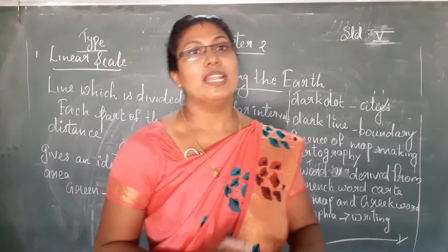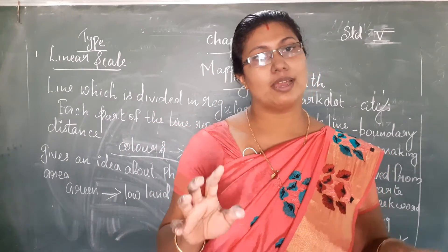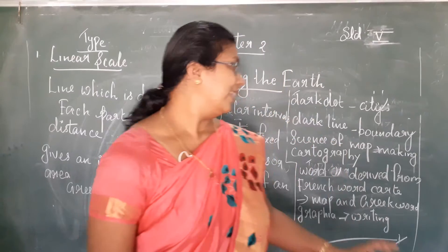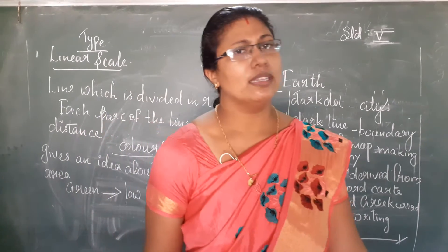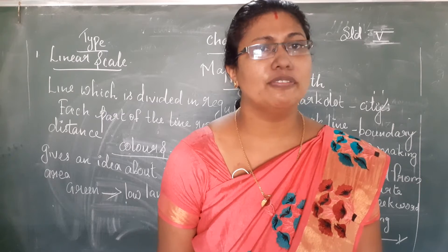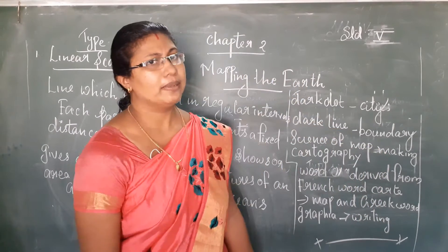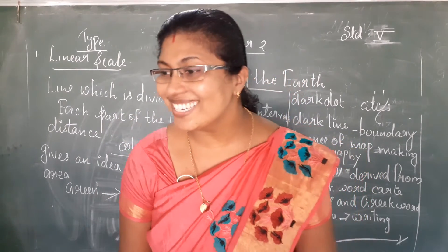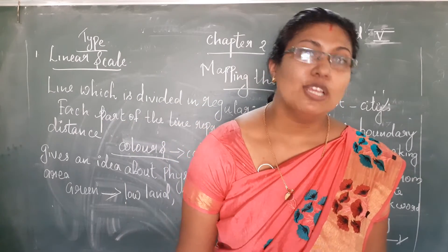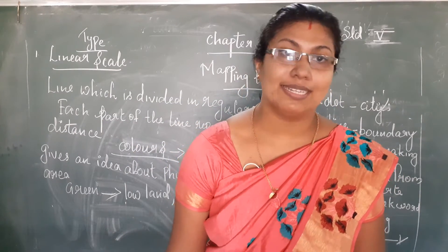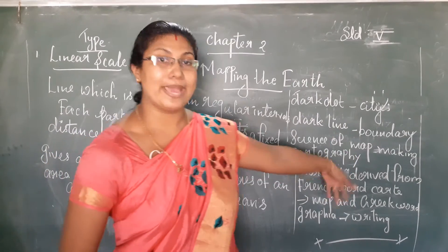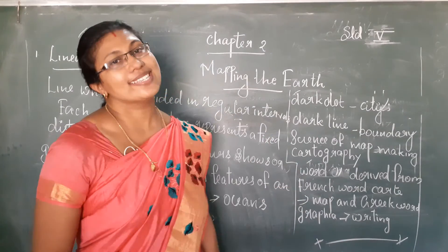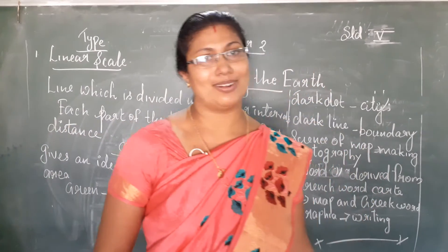Then we are moving with the last point. In your textbook, on the last page, there will be a small square with two or three points. There is one new word for you — I think in the fifth standard, while studying the fourth chapter, you dealt with that: it is cartography. What is it? Cartography is the science of map making, and is known as cartography.